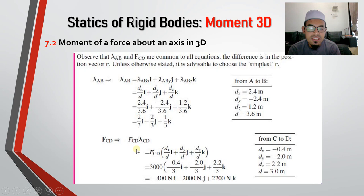So next is F_CD equals to lambda CD, isn't it? Because F_CD is given in the form of resultant. So we need to resolve it in the form of vector. So we can multiply it by lambda CD. So lambda CD from C to D, then this is our lambda. Then our F_CD is negative 400 Ni minus 2000 Nj plus 2200 Nk.